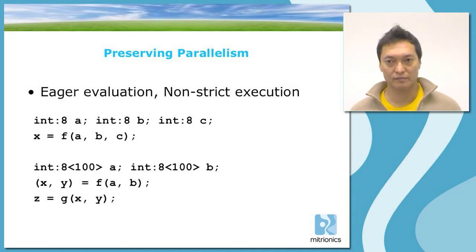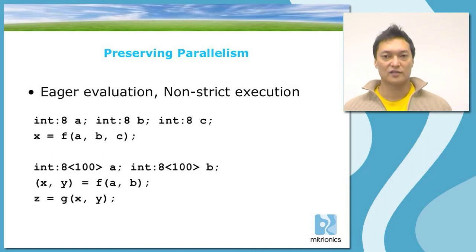By non-strict execution, I mean the ability to call a function without actually computing all the arguments to that function in advance. So in the example here, we have a function called f with the parameters a, b, and c. In a non-strict language, the function f can be called even if not all the variables a, b, and c have been computed. The only case in which a variable needs to be computed is if it's needed for the computation of the function.